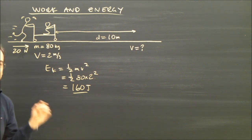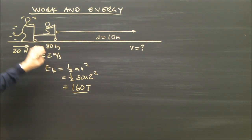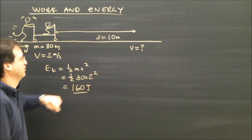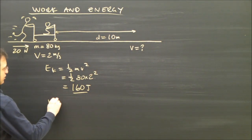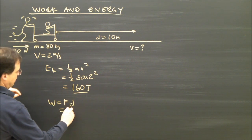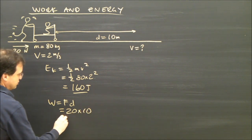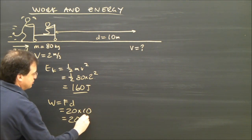They already have some energy in this system, but they're adding to it. They're going to push for a distance of 10 meters. So, how much work are they doing? Well, force times distance is 20 newtons times 10 meters is 200 joules.